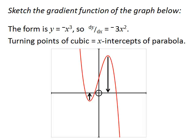And the turning points of the cubic are going to be the x-intercepts of our parabola. They are where our gradient function is zero. And there it is. Negative parabola with its x-intercepts being the turning points of the original function.